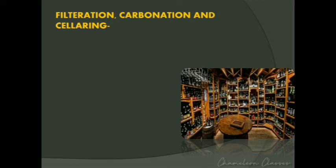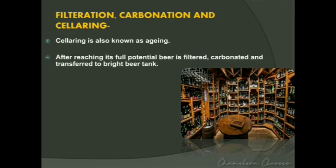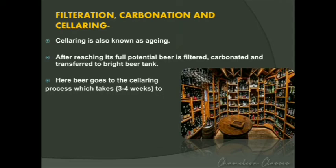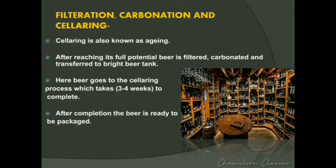The eighth step involves filtering, carbonation, and the cellaring process. Cellaring is known as aging of the beer. After reaching full potential, the beer is filtered, carbonated, and transferred to a bright beer tank where it undergoes cellaring. The cellaring process takes mainly three to four weeks to complete, after which the beer product is ready to be packaged. The main requirements for cellaring are a dark and humid environment.